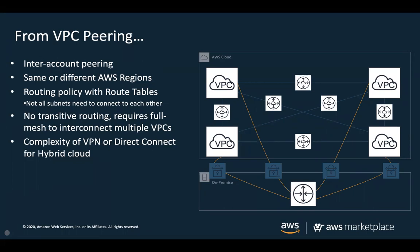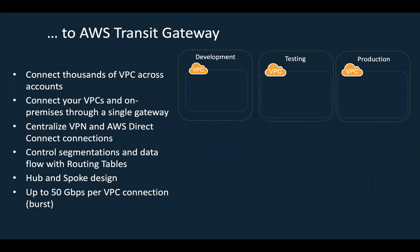Keeping in mind this scaling challenge, AWS introduced AWS Transit Gateway, which provides a highly scalable and highly available infrastructure connecting VPCs and on-premises networks through a central hub. This simplifies your network from a mesh design to a hub-and-spoke design, putting an end to complex peering relationships. AWS Transit Gateway is now considered the best practice for most multi-account, multi-VPC environments.